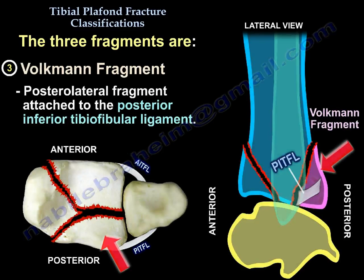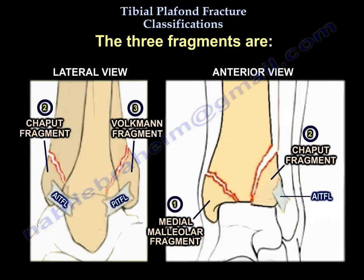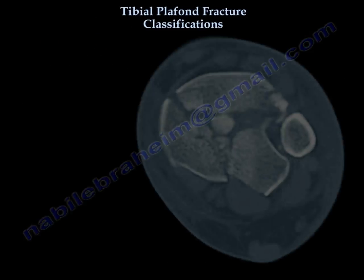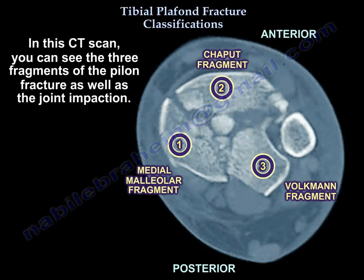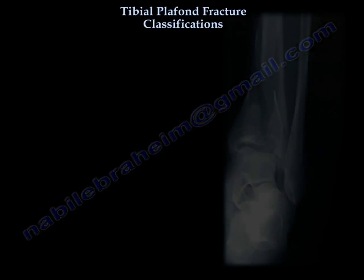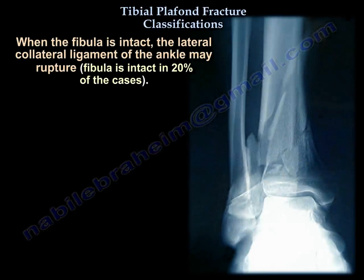This diagram represents the pylon fracture with the three main fragments. In this CT scan, you can see the three fragments of the pylon fracture as well as the joint impaction. When the fibula is intact, the lateral collateral ligament of the ankle may rupture.